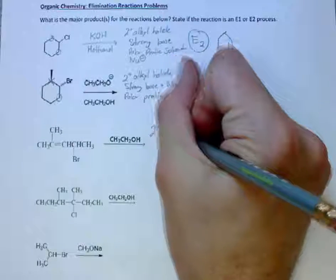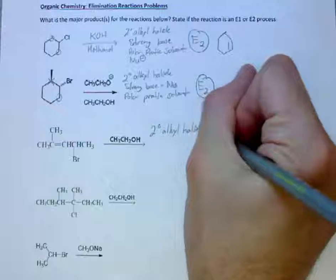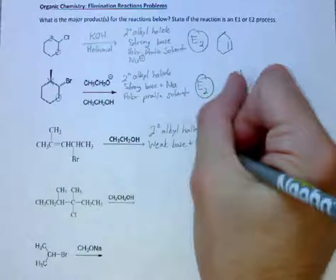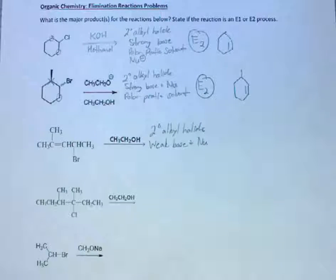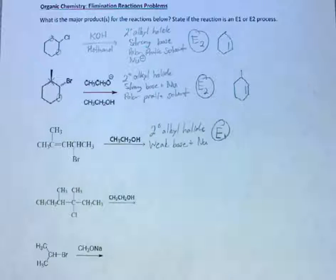We have a secondary alkyl halide with a weak base and a weak nucleophile. Therefore this is going to be an E1 process. Even though this is a secondary alkyl halide with the weak base and nucleophile this will favor an E1 over an E2.